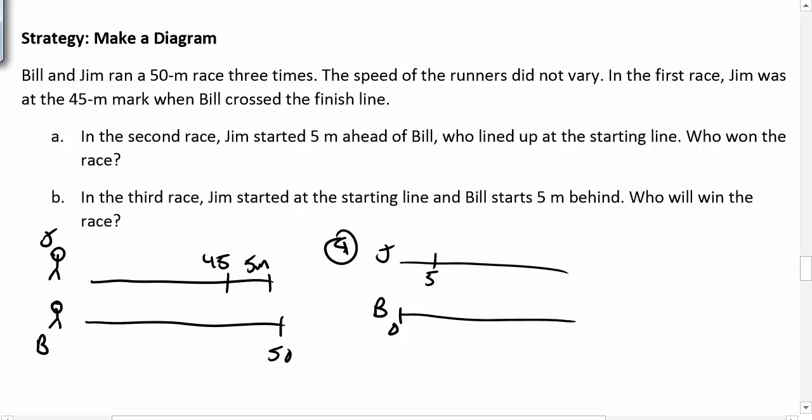Well, Jim was only able to go 45 meters at the same moment that Bill was able to go 50, so in that case, they both cross at the finish line. So it was a tie, whereas in the first race, Bill won.